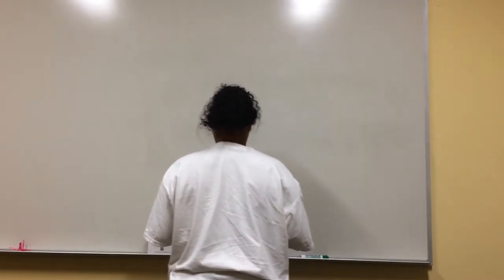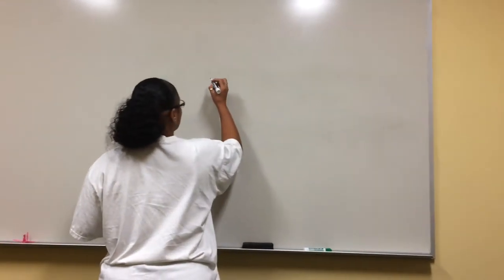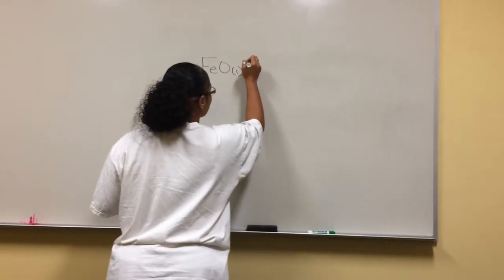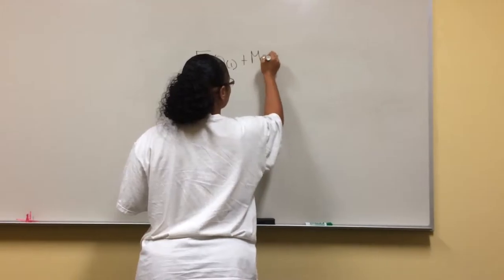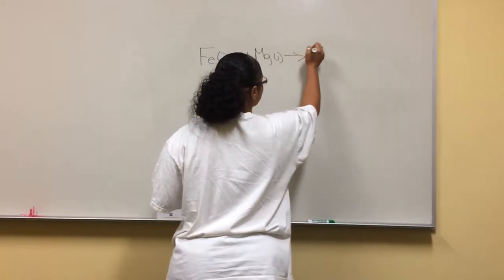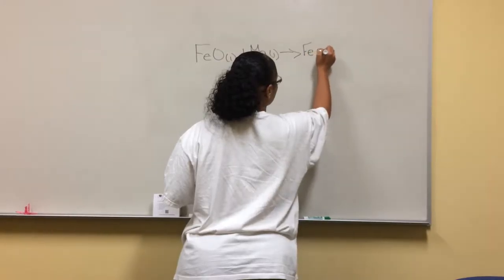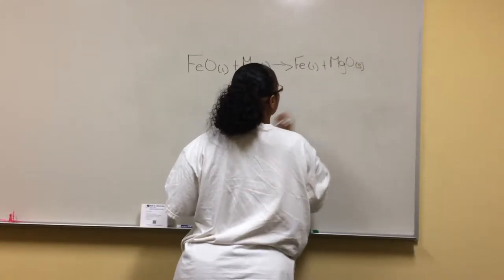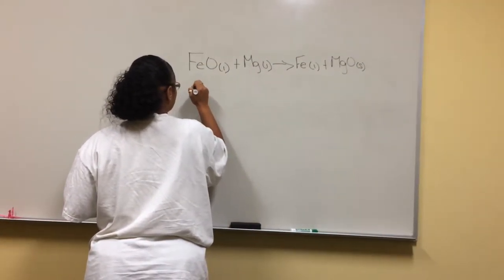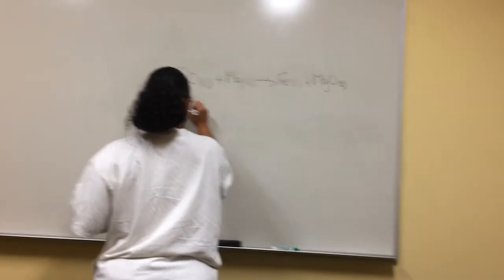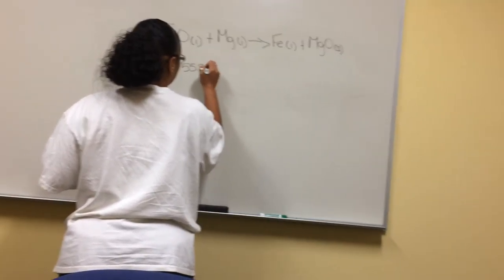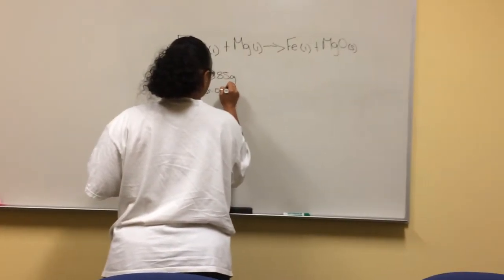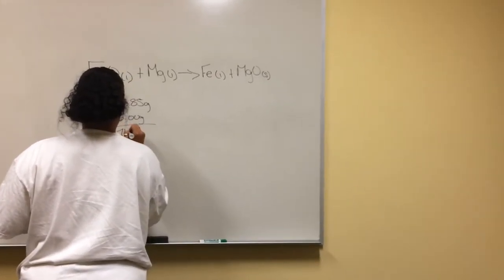So I will put the formula up there. And then we know that iron is 55.85 grams, and then oxygen is 16, which is a total of 71.85.